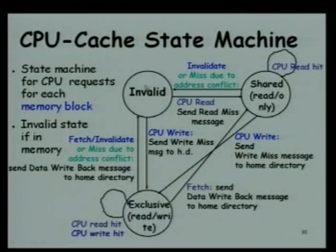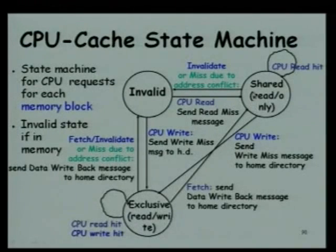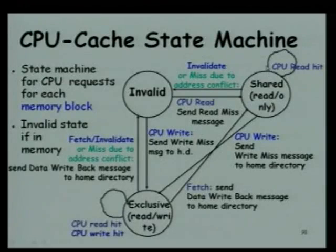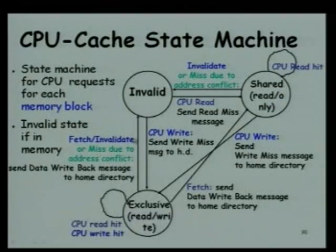If it is invalid and there is a CPU read, it sends a read miss message and the controller handles that. If it is in shared state and an invalidate request comes in, or there is a miss due to address conflict, it just makes it invalid. The invalidate request might be generated by the memory controller. If it is shared and there is a CPU read from the local one, it just keeps there. This is a much simpler diagram than the Snoopy one.